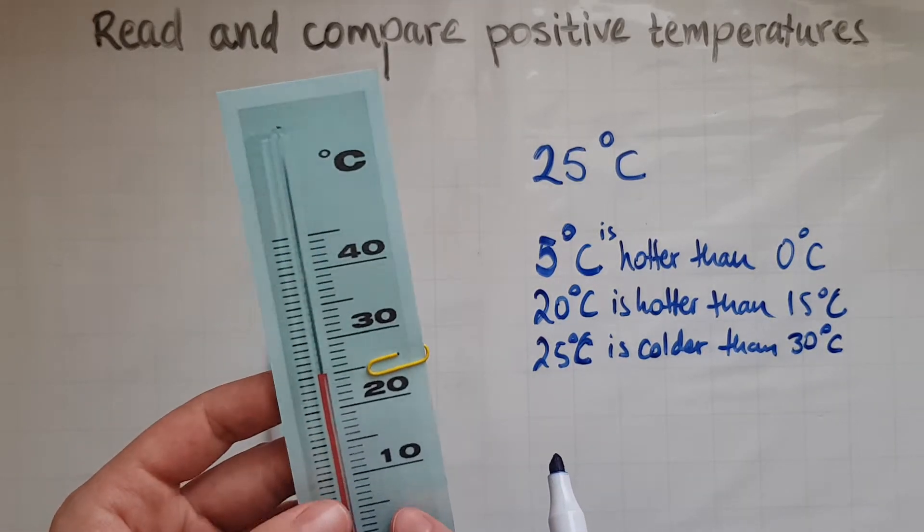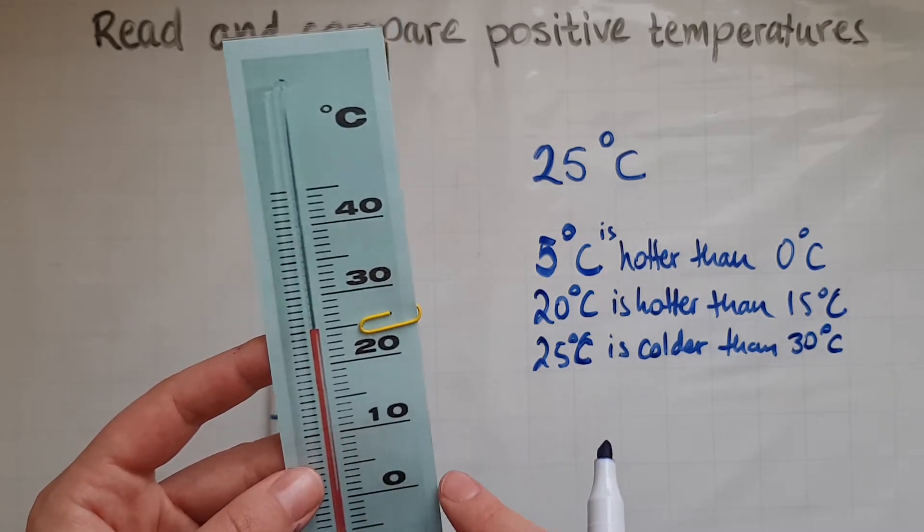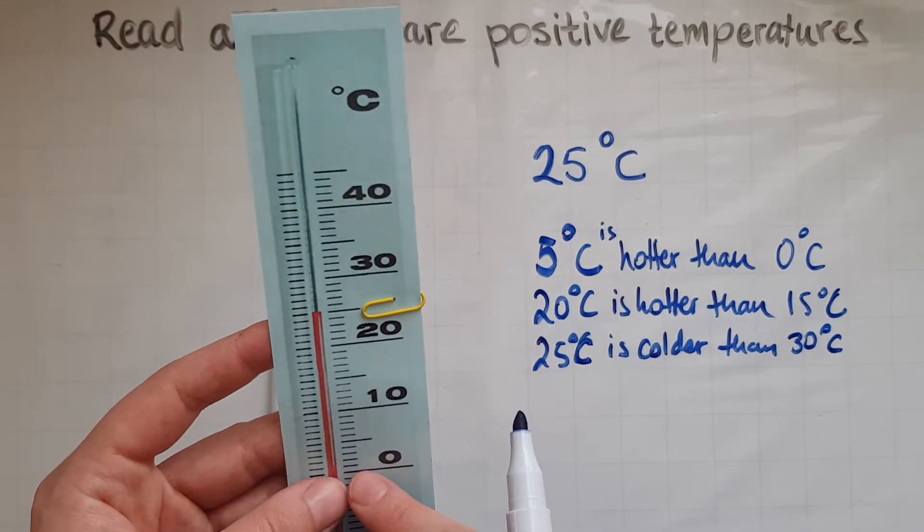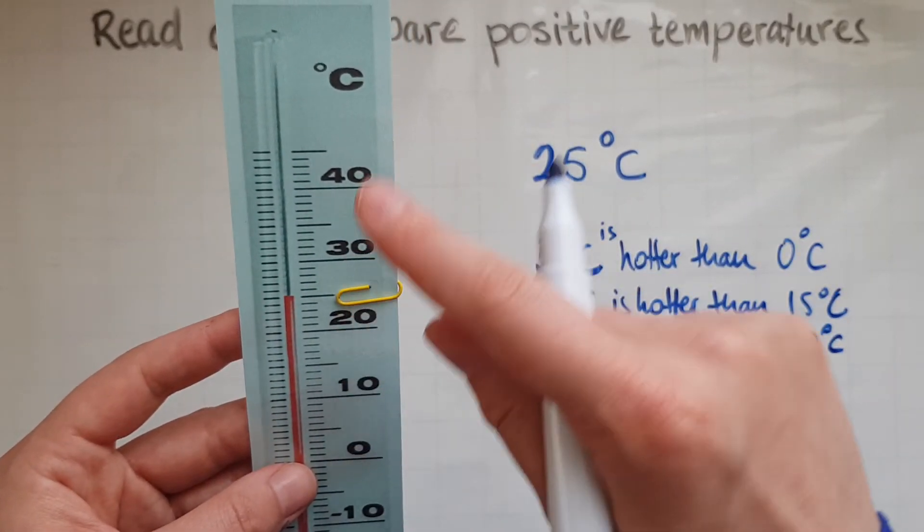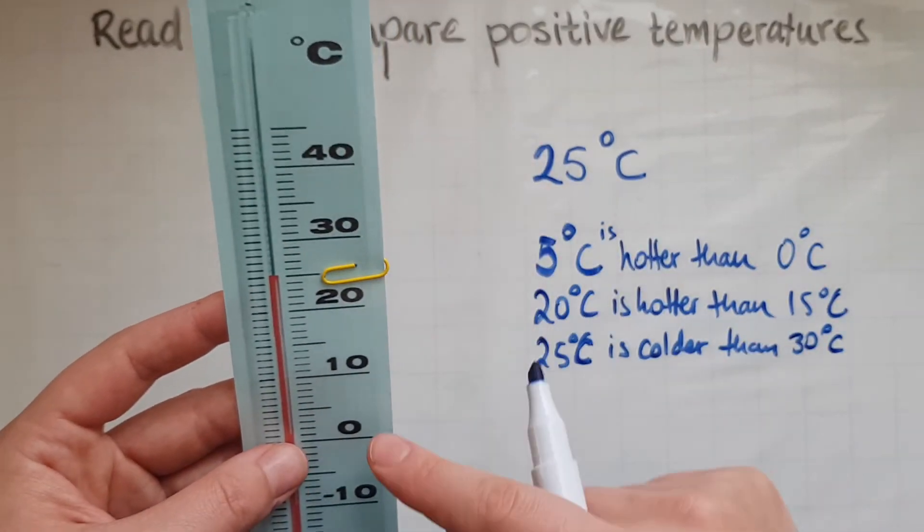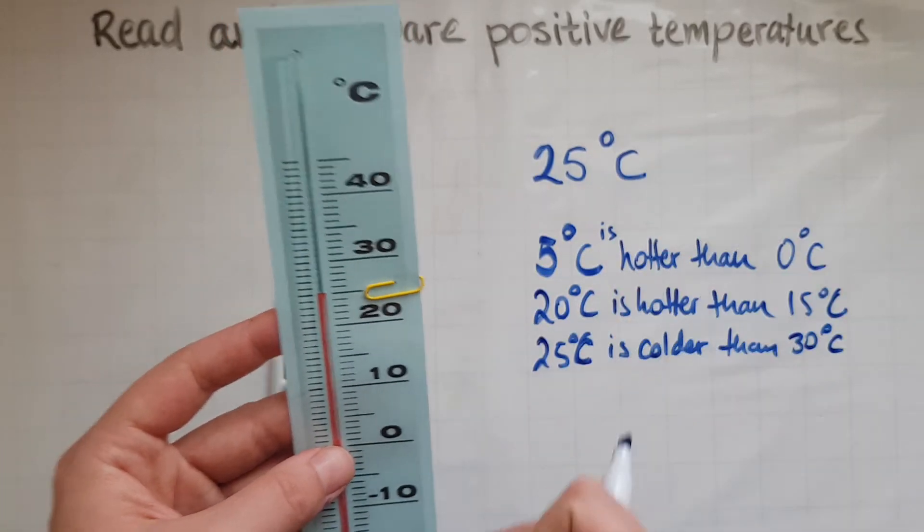If you think or imagine a weather thermometer, there's zero and temperatures go up 1, 2, 3, 4, 5, 6, 7, 8, 9, 10 and so on. So the higher the number, the higher the temperature.